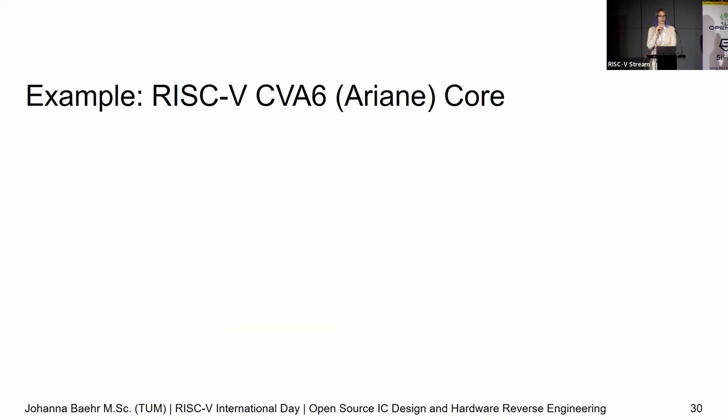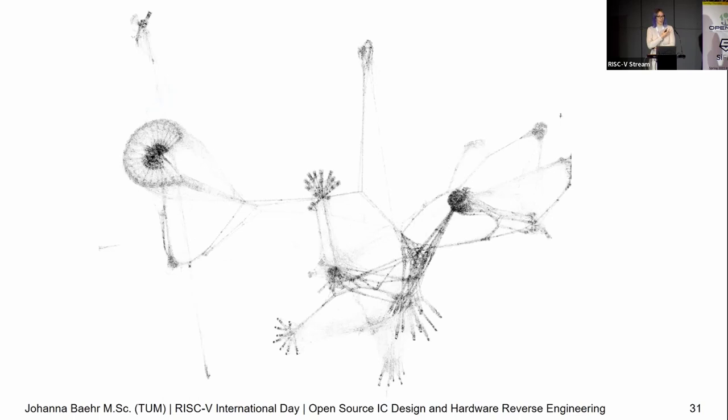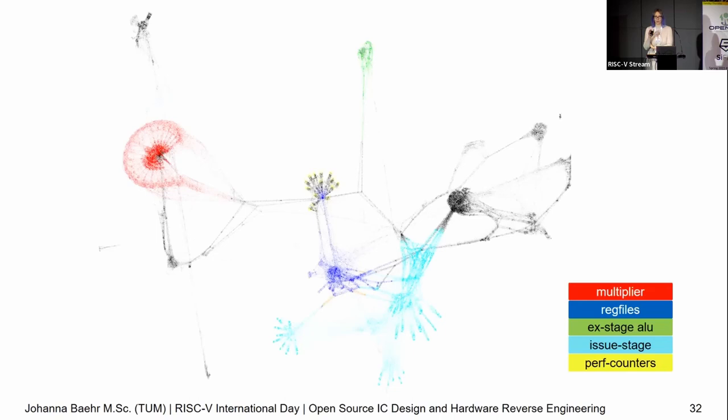I'll give you an example. We did a CVA6 core, which was called Ariane back then. This is what it looks like — about 100,000 gates, and I guess you haven't seen it like this before. I highlighted some main parts: in red we've got the multiplier — multipliers always look like this. We've got the execution stage ALU at the top in green, some register files, the issue stage, and so on. I removed some stuff, so this is not the complete core, but you get the idea of what it basically looks like.